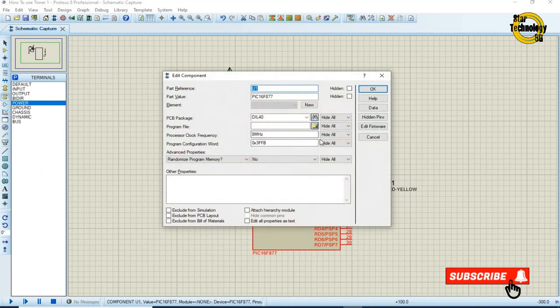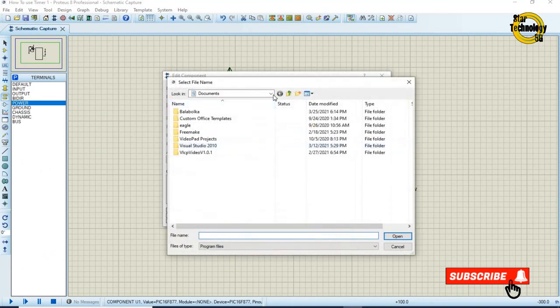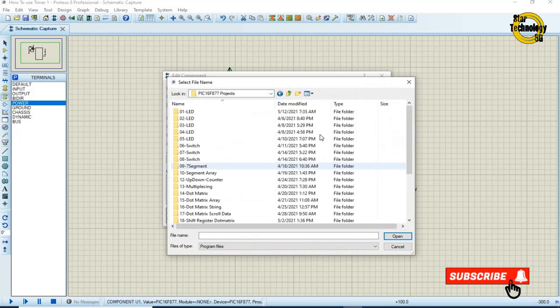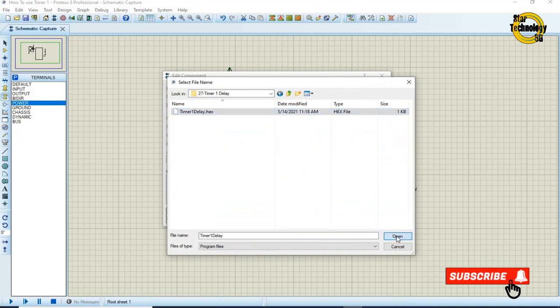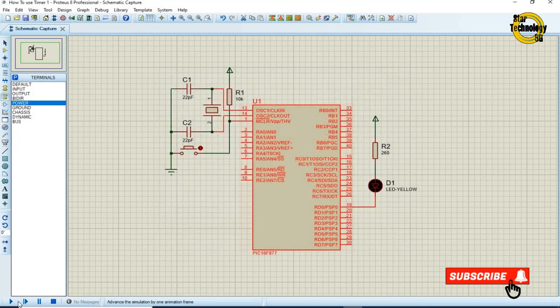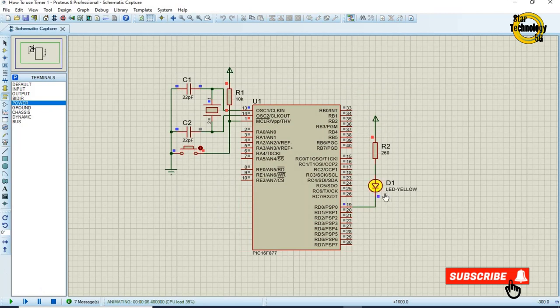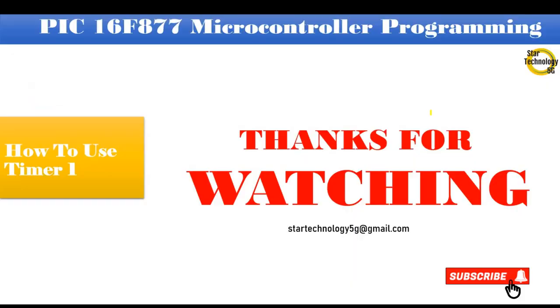Double click on the microcontroller. Select the hex file and click on run simulation. Now you can see LED gets turned on and after 1 second delay it will get turned off. If you have any problem with the code let me know in comments. Thanks for watching.